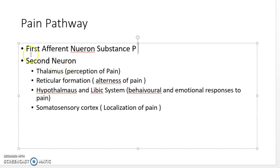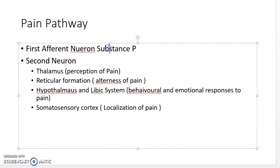One important thing to mention about the first afferent neuron: it is triggered by substance P. Substance P does not elicit pain itself, but it stimulates the nerves to sense the pain. It does not elicit the sensation directly but does trigger the nerve to sense pain.